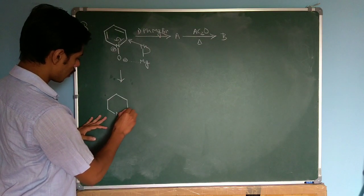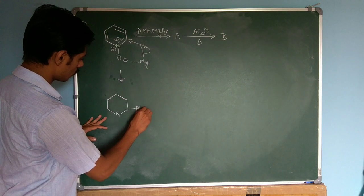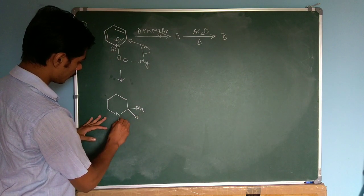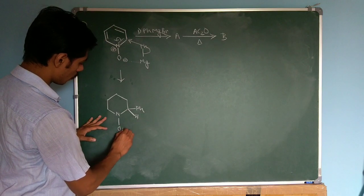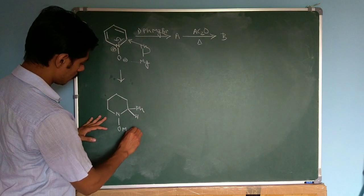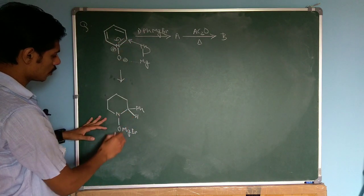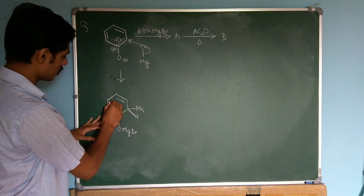That will give you a product. So addition of this phenyl, you will have H over here and here you have O Mg Br. The positive charge goes here, so you will have a neutral species.